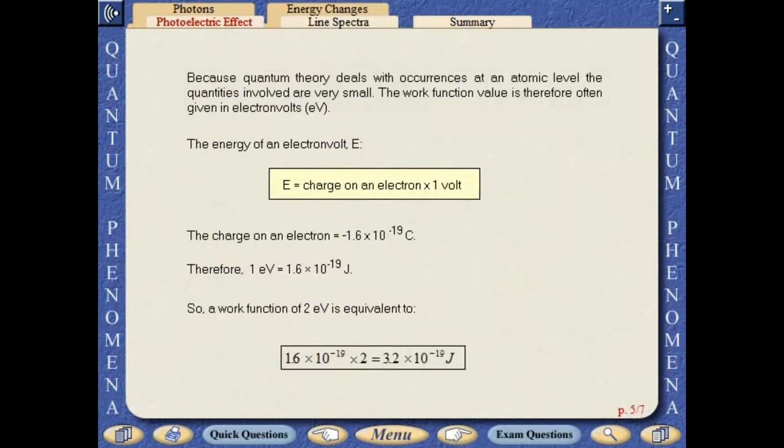Because quantum theory deals with occurrences at an atomic level, the quantities involved are very small. The work function value is therefore often given in electron volts. The energy of an electron volt is equal to the charge of an electron multiplied by 1 volt. One electron volt has a value of 1.6 times 10 to the minus 19 joules.